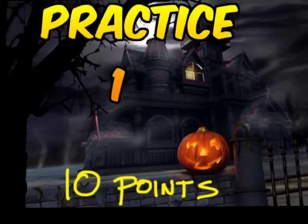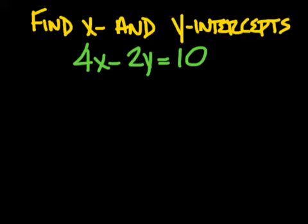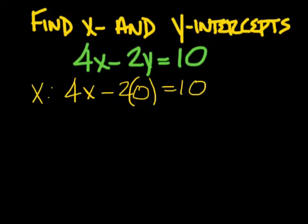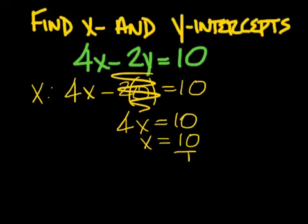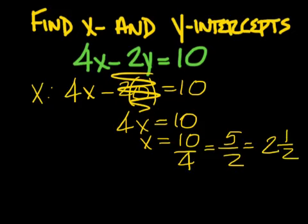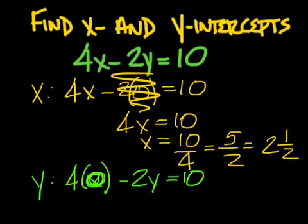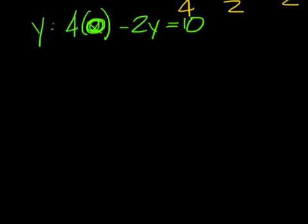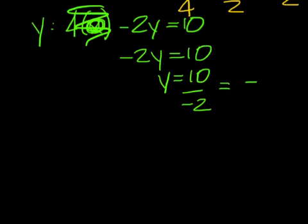On this problem, to find the x-intercept, you put a 0 in for y, which means this cancels out. You're left with 4x equals 10. Divide 10 by 4, simplify that to 5 over 2, make a mixed number of 2 and a half. Now for the y-intercept, put a 0 in for x, and that should be a 0. Minus 2y equals 10. So it's going to be a cancellation there. Negative 2y equals 10. Divide 10 by negative 2 to get negative 5.